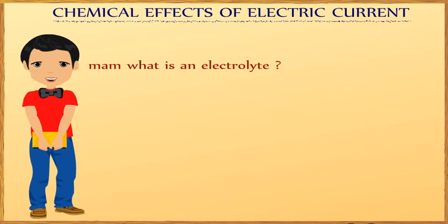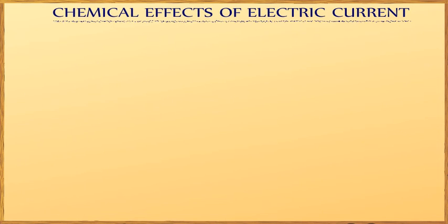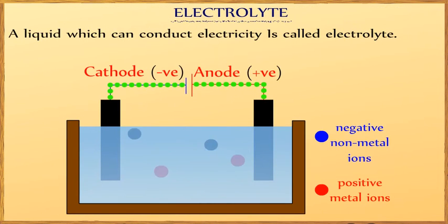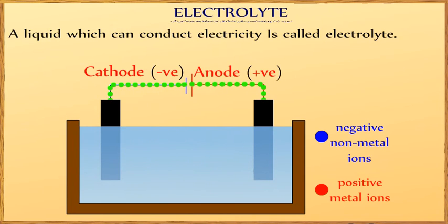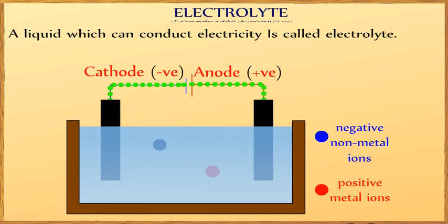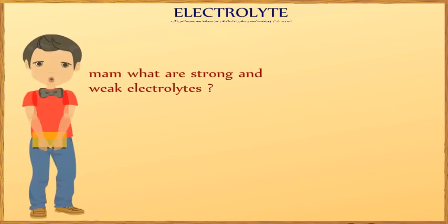Ma'am, what is an electrolyte? A liquid which can conduct electricity is called an electrolyte. The solutions of acids, bases and salts in water are electrolytes.